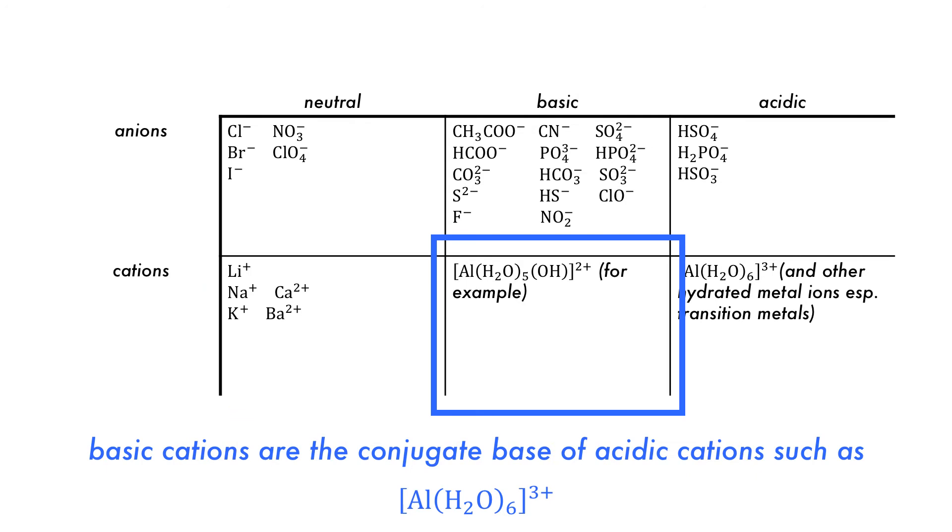Basic cations are the conjugate bases of acidic cations, such as the acidic metal Al3+.